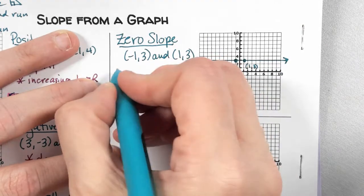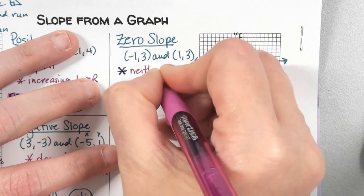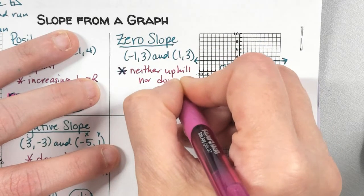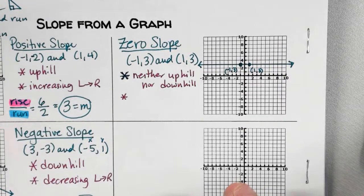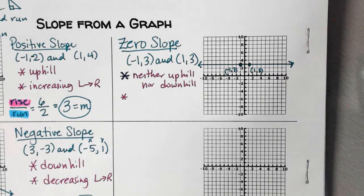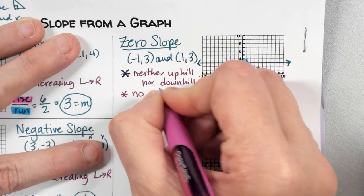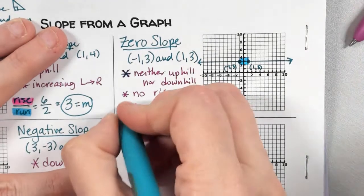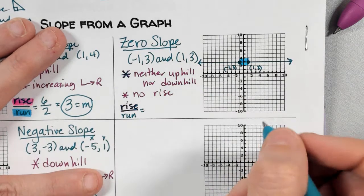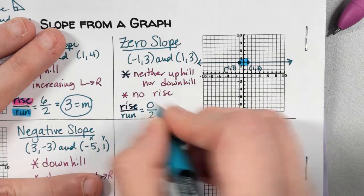What do we notice about this line? Which way is it going — uphill or downhill? It's going neither — neither uphill nor downhill. What can we not do that we're supposed to do in step three? We can't make a triangle. Which one's missing, rise or run? There's no rise. So if I put rise over run, my rise is zero, and my run is two.